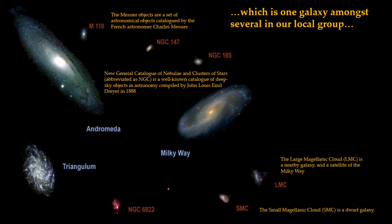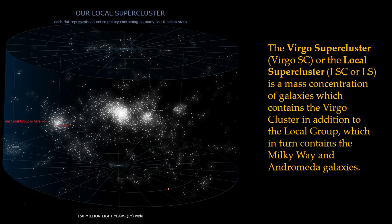Outside the Milky Way, you've got the local group. You're going through this address and starting to put together that we are such a small part of such bigger things. You've got the Messier objects, the new general catalog of nebulae and clusters, and GCs — this is what is called our local group. Our galaxy is part of another local group of galaxies. After that, the next portion of our cosmic address is what's called the Virgo supercluster, or simply the local supercluster — a concentration of galaxies which contain the Virgo cluster in addition to the local group, which in turn contains the Milky Way and Andromeda galaxies.